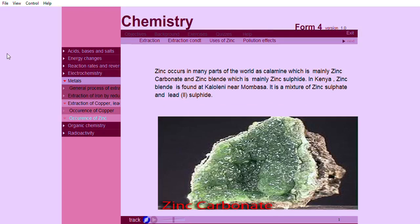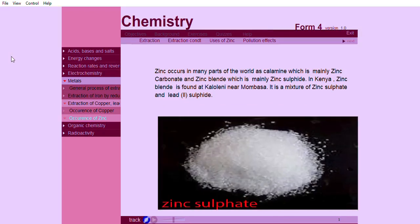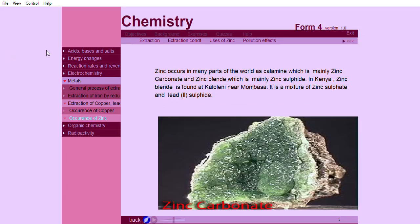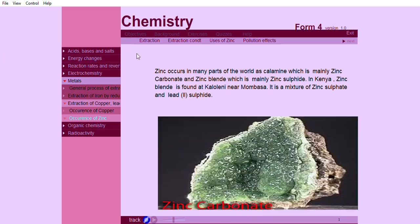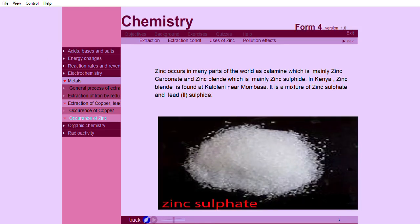Zinc occurs in many parts of the world as calamine, which is mainly zinc carbonate, and zinc blend, which is mainly zinc sulfide. In Kenya, zinc blend is found at Kaloleni, near Mombasa. It is a mixture of zinc sulfide and lead sulfide.